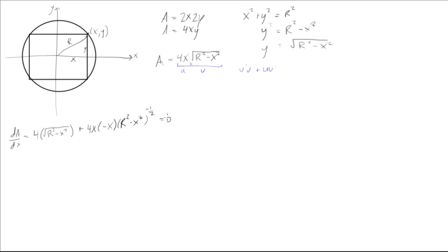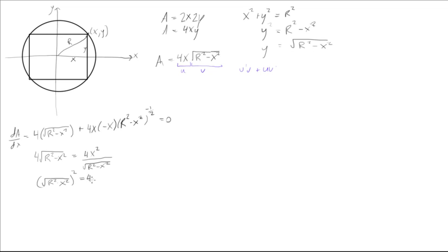We set that all to zero. Rearranging, we can write 4 times the square root of r squared minus x squared, all squared, equals 4x squared over the square root of r squared minus x squared. We divide both sides by 4 and multiply both sides by the square root of r squared minus x squared, and we get r squared minus x squared equals x squared.